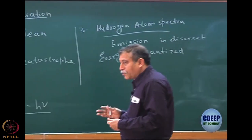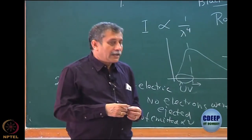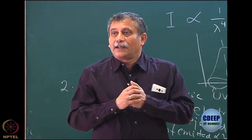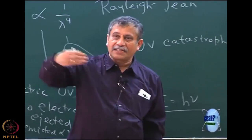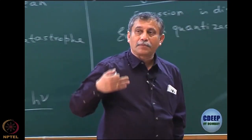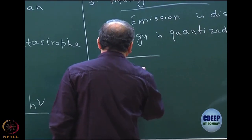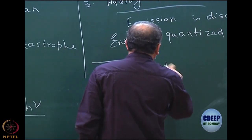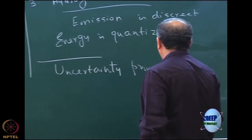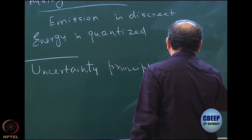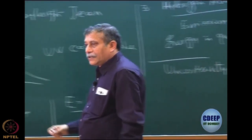In the basic quantum mechanics class, we tell the postulates of quantum mechanics. Two very important principles emerged: first, energy is proportional to frequency; second, the uncertainty principle, which says that the uncertainty in position and momentum must be greater than ℏ/2.